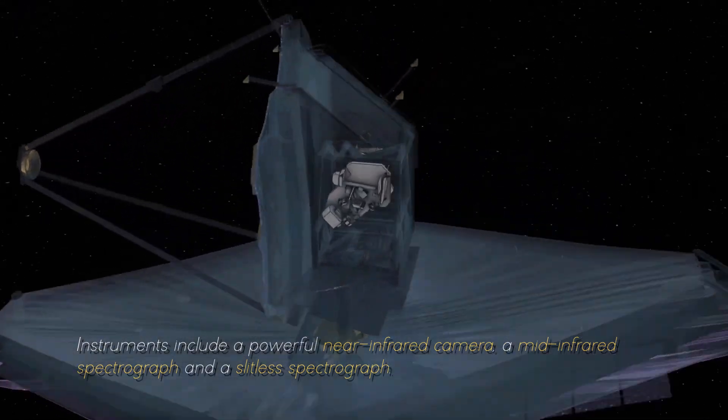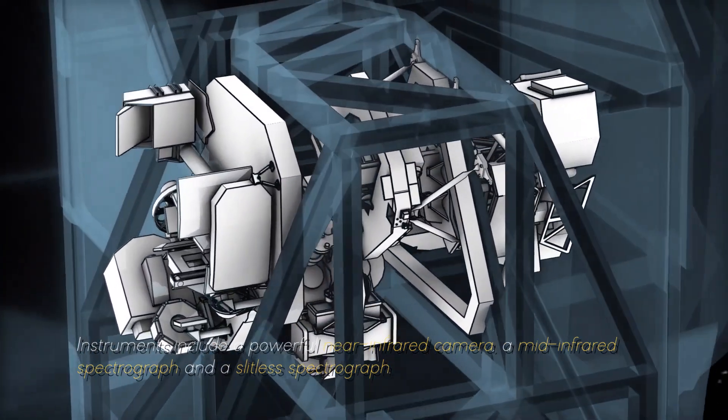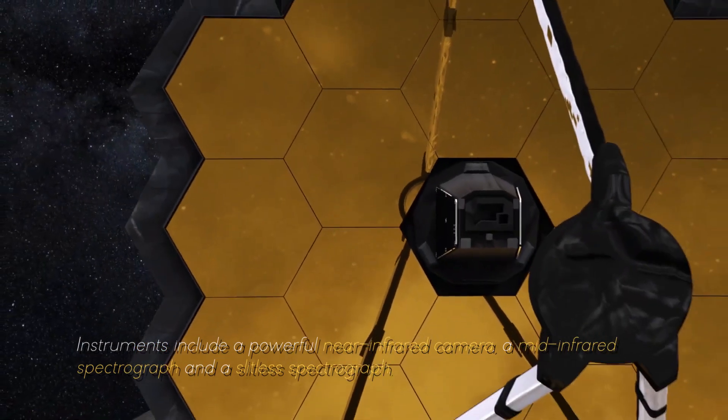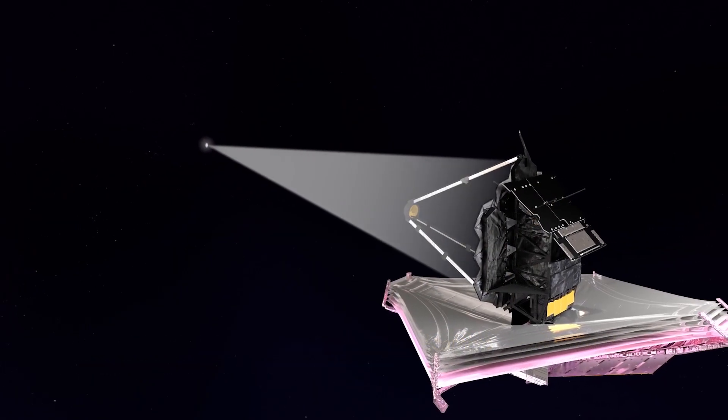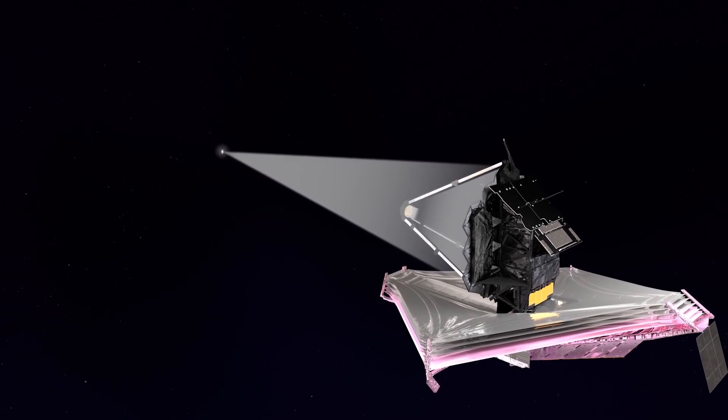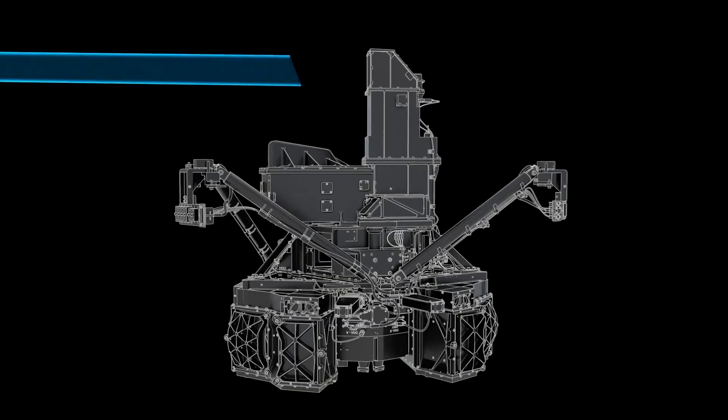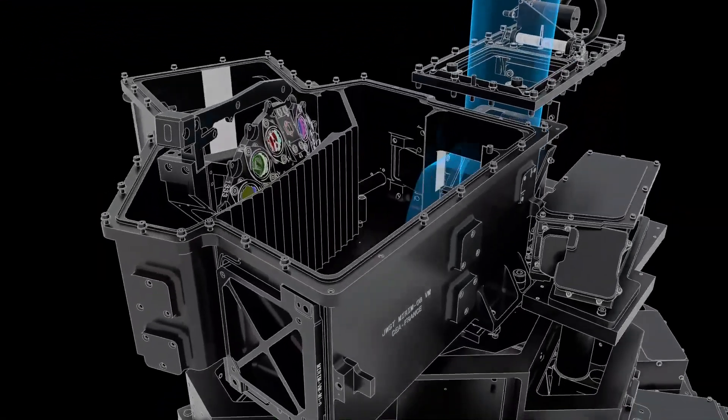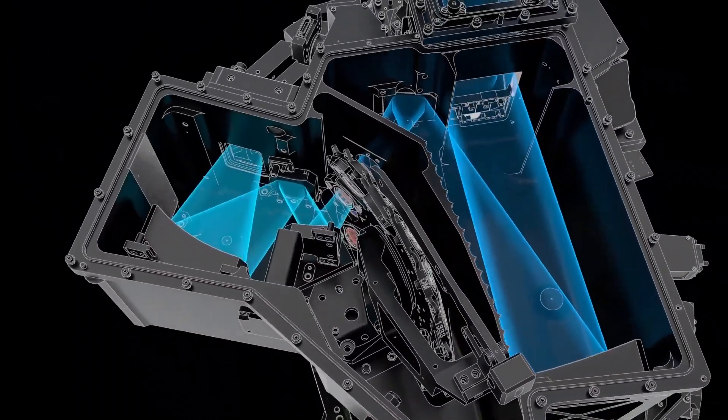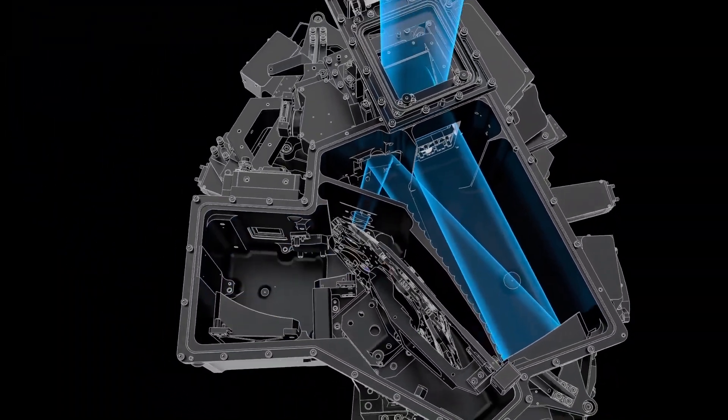This allows the JWST to collect and focus light from distant celestial objects with unmatched precision and sensitivity. Instruments include a powerful near-infrared camera, a mid-infrared spectrograph, and a slitless spectrograph. These instruments work together to capture images, measure spectra, and study the properties of objects ranging from the oldest galaxies to the planets of our solar system.